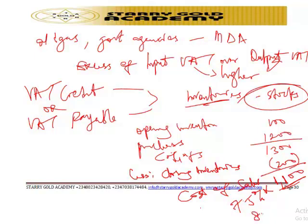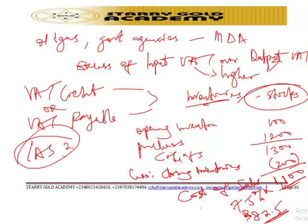Applying 7.5% on 1,100 Naira gives you 82.5 Naira as your input VAT. It is important to know that inventories are measured at the lower of cost and net realizable value. The cost of inventories shall comprise cost of purchase, cost of conversion, and other costs incurred in bringing inventories to their present location and condition, in line with IAS 2.